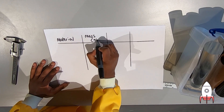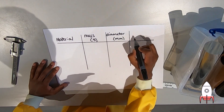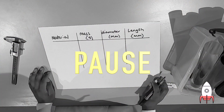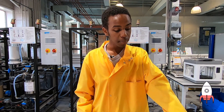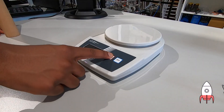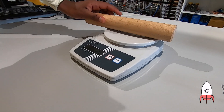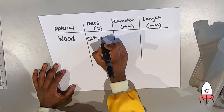First, let's draw a table. Next, weigh your material. Remember to tare your scale and take a record of how much it weighs. Do this for every material and write it down into your table before we move on to the next step.